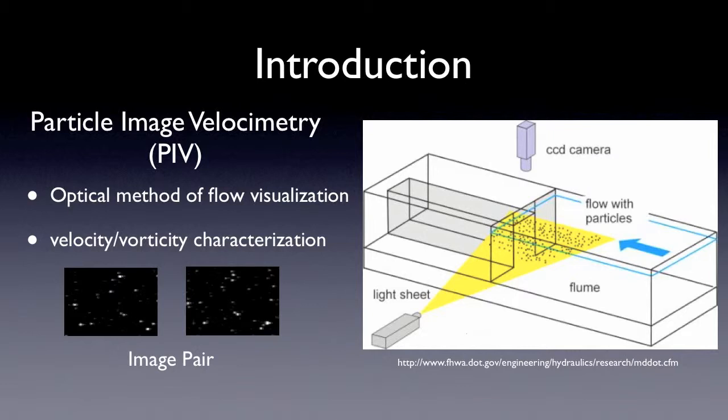Particle Image Velocimetry is an optical method of flow visualization. It also has velocity and vorticity characterization. It is a technique that enables the measurement of flow velocity at multiple positions in a plane. As shown in the right picture, the blue arrow indicates the water flow direction.